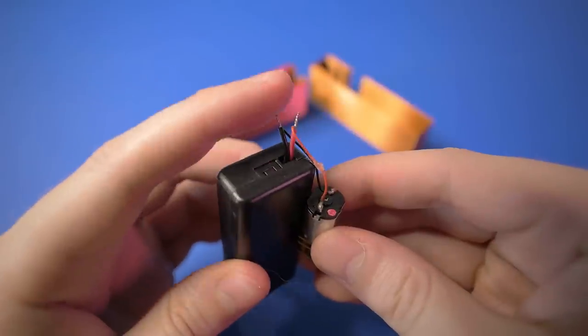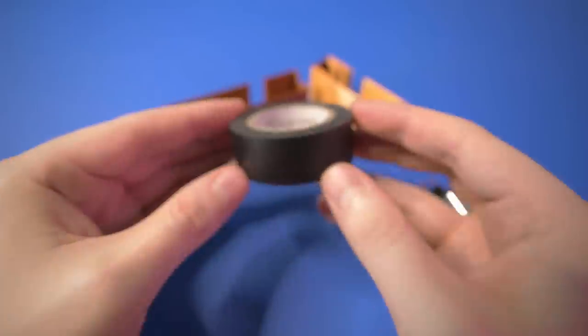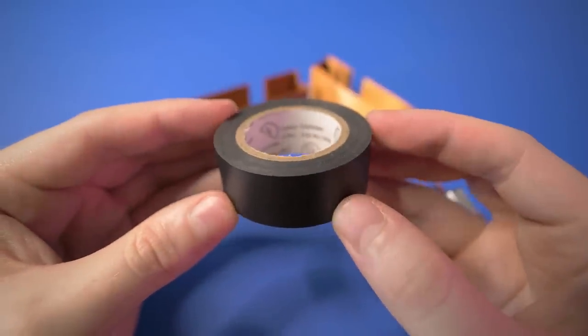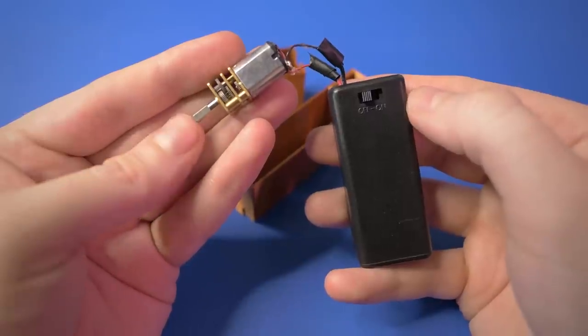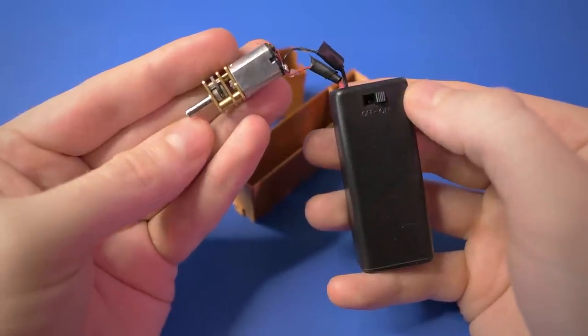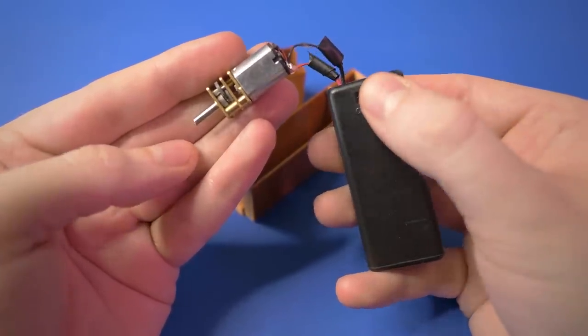Now these two wires should never touch, it would create a short circuit, so we need to cover them up with electrical tape. And now is a good time to test if it's still working. And note that you can flip the wires on the motor to make it spin in the opposite direction.